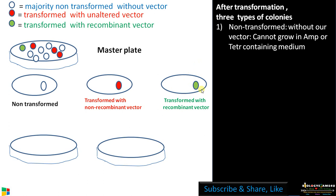Picking up these recombinant colonies is the most difficult part, as the majority of colonies will be non-transformed. In the non-transformed colonies the vector is intact without any disruption, whereas in the recombinant colonies we have introduced our gene of interest into the tetracycline region — therefore the tetracycline region is no longer active due to insertional inactivation.